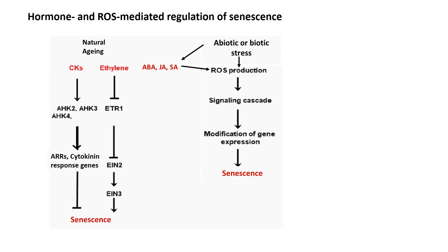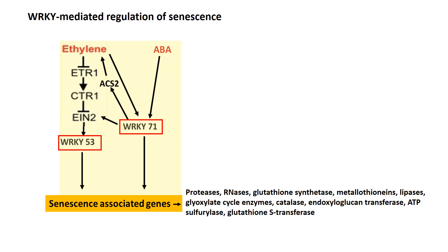Other hormones like abscisic acid, jasmonic acid or salicylic acid are known to promote senescence via signaling pathways in which reactive oxygen species are involved. However, these hormones play a role in inducing senescence primarily in response to abiotic or biotic stresses rather than natural senescence. Besides hormones, several transcription factors have been identified that regulate the expression of senescence-associated genes in Arabidopsis. Several WRKY transcription factors have been identified that act downstream of the ethylene or ABA signaling pathways and regulate the expression of senescence-associated genes. WRKY53 is upregulated at a very early stage of leaf senescence through the ethylene signaling pathway but decreases at later stages. This transcription factor binds to the promoter regions of various senescence-associated genes to regulate their transcription. A knockout line of WRKY53 showed delayed leaf senescence whereas its overexpression caused precocious senescence.